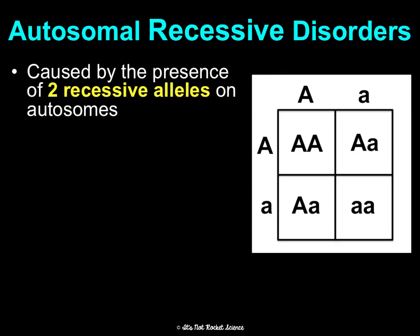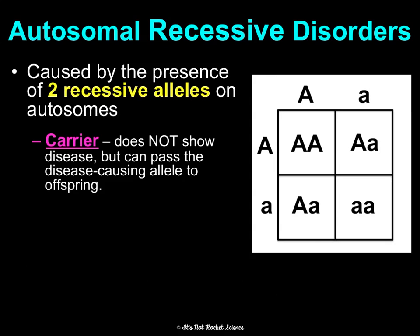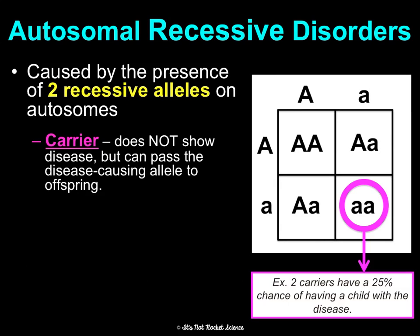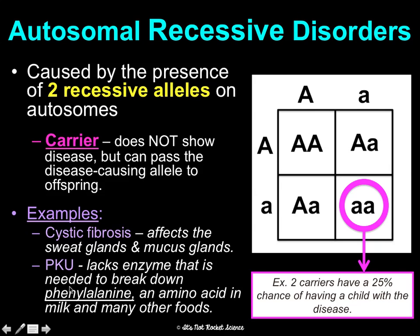Autosomal recessive disorders are caused by the presence of two recessive alleles on your autosomes — one of your first 44 chromosomes. Carriers do not show the disease but can pass the disease-causing allele to their kids. For example, two completely normal parents who are both carriers have a 25% chance of passing the disease to their child. Cystic fibrosis and PKU are examples — with cystic fibrosis involving a protein problem causing mucus buildup in lungs, and PKU causing a lack of an enzyme that breaks down phenylalanine, an amino acid in many foods.